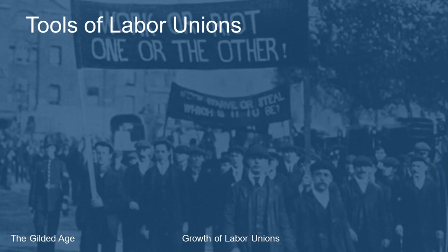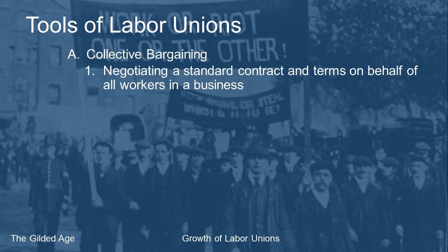In order to get their demands met, labor unions had a couple of tools they could use. The first is collective bargaining — where the union negotiates one contract that will then be applied to all workers. Some businesses would negotiate individual contracts so workers didn't know what their fellow employees were making.